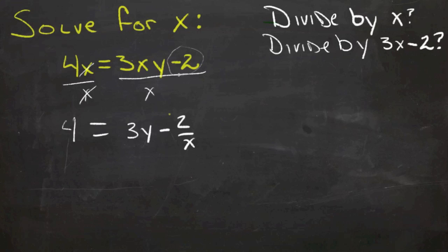We can cancel the x's in the first term, but we can't cancel anything in the second term. So then, if we wanted to get x by itself, we'd have to, or we could add 2x to both sides.